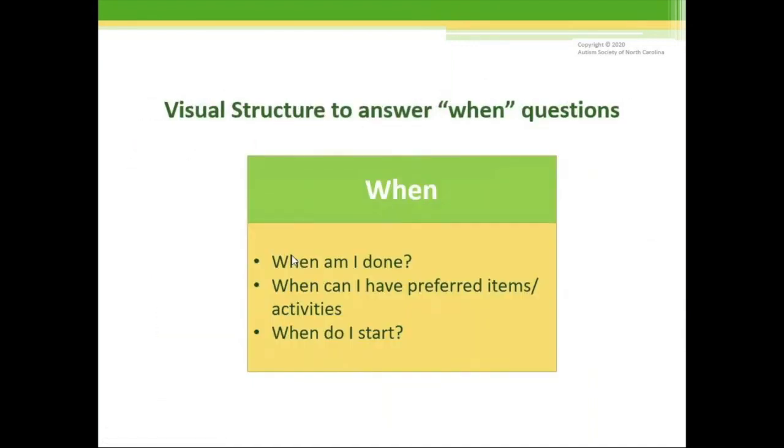And now we're going to move on to visual structure to answer when questions. When am I done? When can I have preferred items and activities? When do I start? There are a lot of examples throughout this so far that have showed when you can have your preferred items. If you go back to the post-it notes, there's where the break is. There's a lot of ways to put on a task analysis done. So we're going to really focus on the when and showing when in a visual way, starting with one very useful and effective structure tool for people with autism is going to be visual timers.